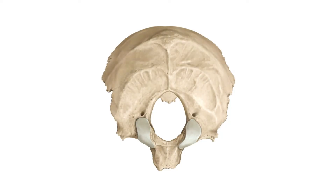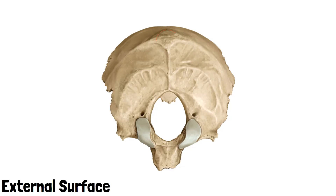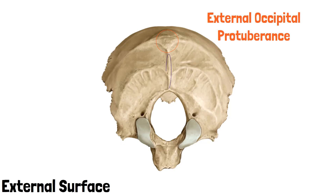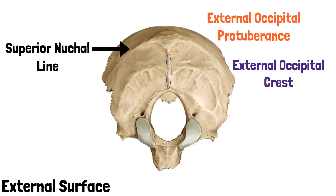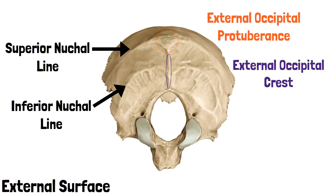Let's have a look at the external features first. This is the external surface of the bone. This is the occipital protuberance, located at the center of this external surface. This is the external occipital crest, which extends from the occipital protuberance on the midline to the posterior border of the foramen magnum. This is the superior nuchal line, which passes laterally from the protuberance on each side. And this is the inferior nuchal line, which passes laterally from the middle of the external occipital crest on each side.